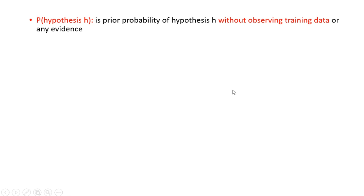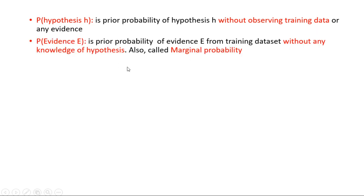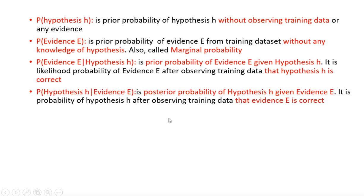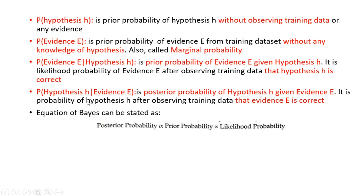In this equation, P(H) is the prior probability without observing the training data. P(E) in the denominator is the prior probability of evidence E from the training dataset — also called marginal probability. P(E|H) is the likelihood. What we are finally calculating is the posterior probability P(H|E). The Bayes theorem states that posterior probability is directly proportional to prior probability multiplied by likelihood probability.